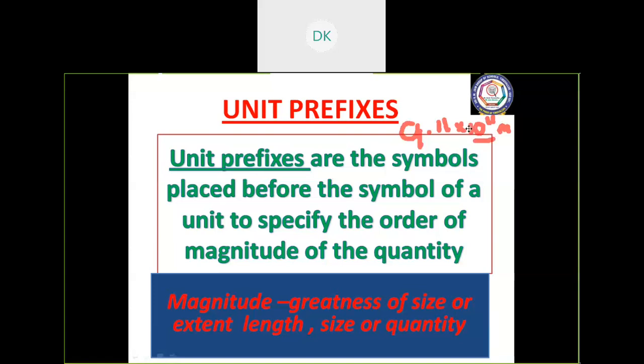Prefixes are the symbols placed before the symbol of a unit. What is the purpose of using these prefixes in front of the unit? It will specify the order of magnitude. Order in the sense, if you write 9.11 into 10 power 11 means 10 to the power of 11 means you can add along with the value 7 zeros. So you will get some extended value, so it will show the magnitude.